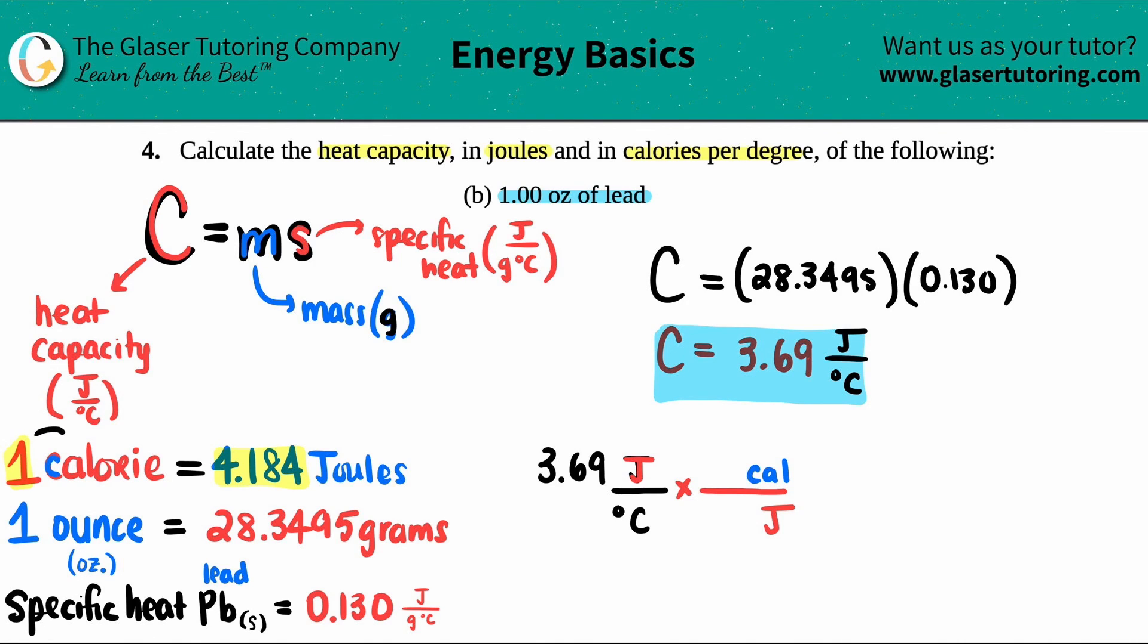So the one goes with the calorie and the 4.184 goes with the joules. Here's the calorie, that's a one. Here's the joules, 4.184. Cancel out the joules. Now you're left with calorie per degree Celsius, which is what you want. So 3.69 divided by 4.184.